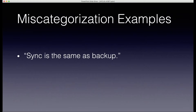A backup holds onto your things for much longer — potentially even forever — and holds onto older versions of things. So if you accidentally make a change to a file, the previous version is still there in your backup. I can easily see why somebody might put those two things in the same box, but they really are quite different. It can be dangerous to conflate them, because you might end up losing data.